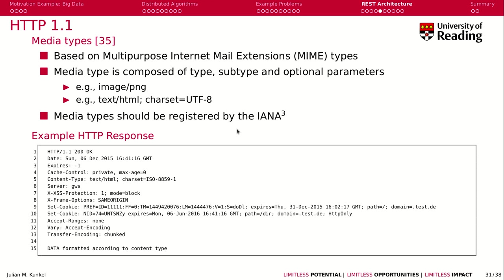Media types are registered by the IANA. Here you see an example HTTP response that a request triggered. We get the protocol version, a status code of 200 meaning OK, the date of the document, cache information, extensions, and cookie information. Finally, there is a new line separating the header from the data. The media content type is specified as text/HTML in a given character set.